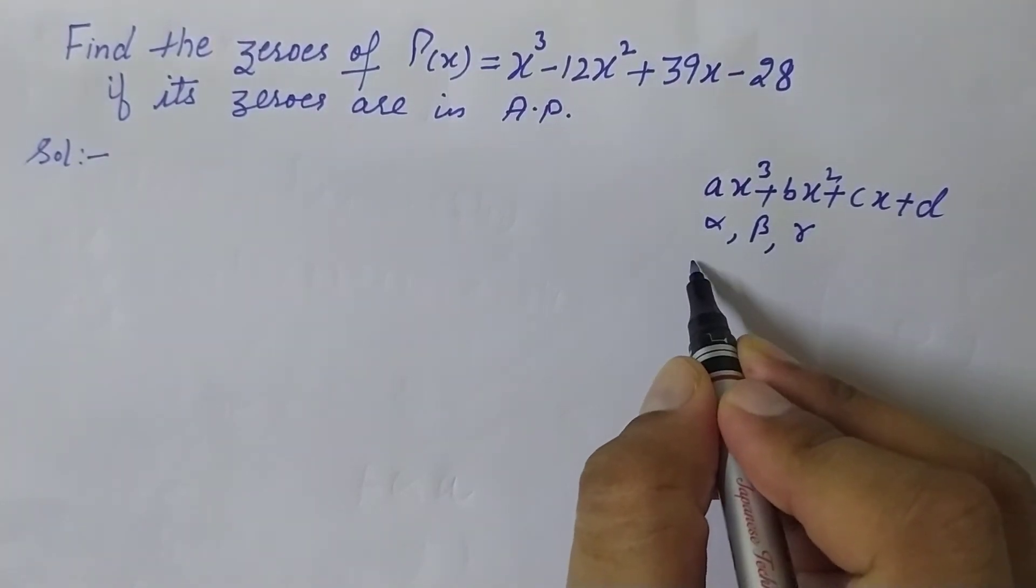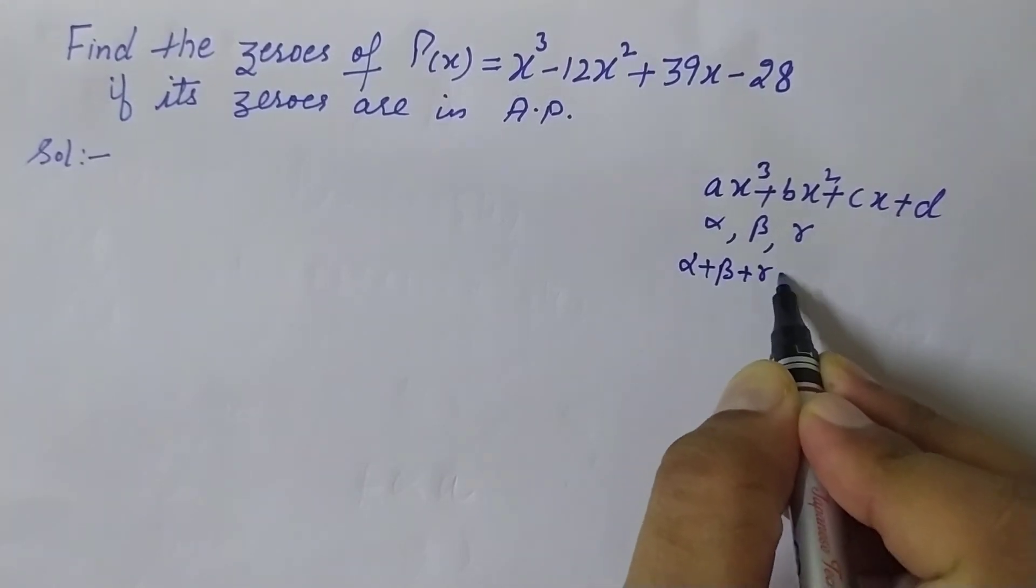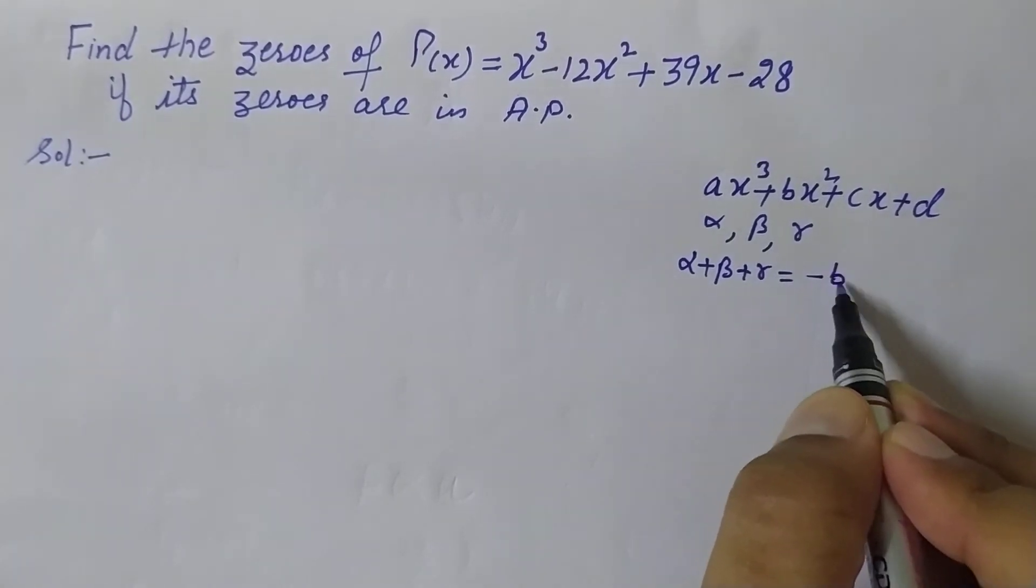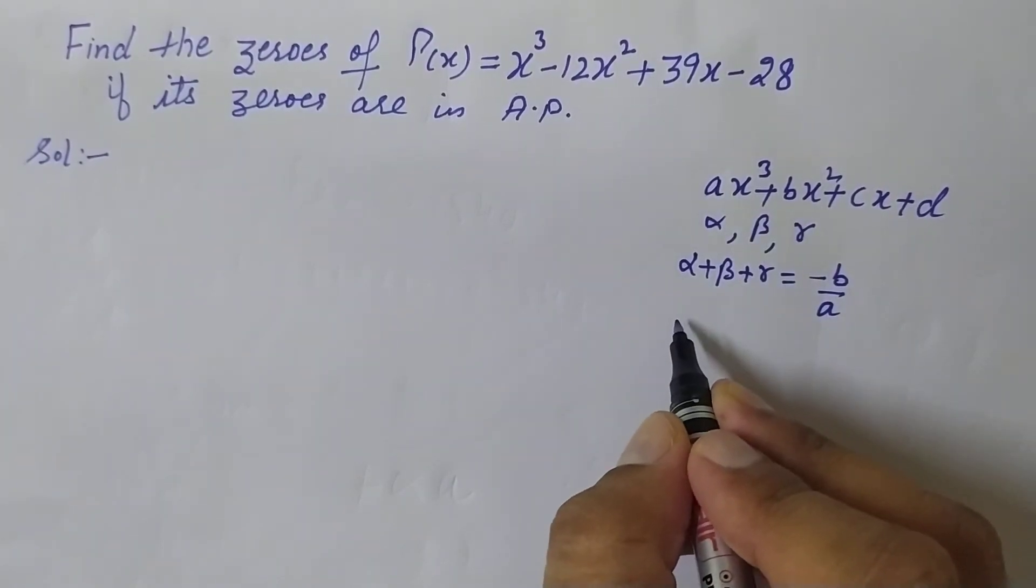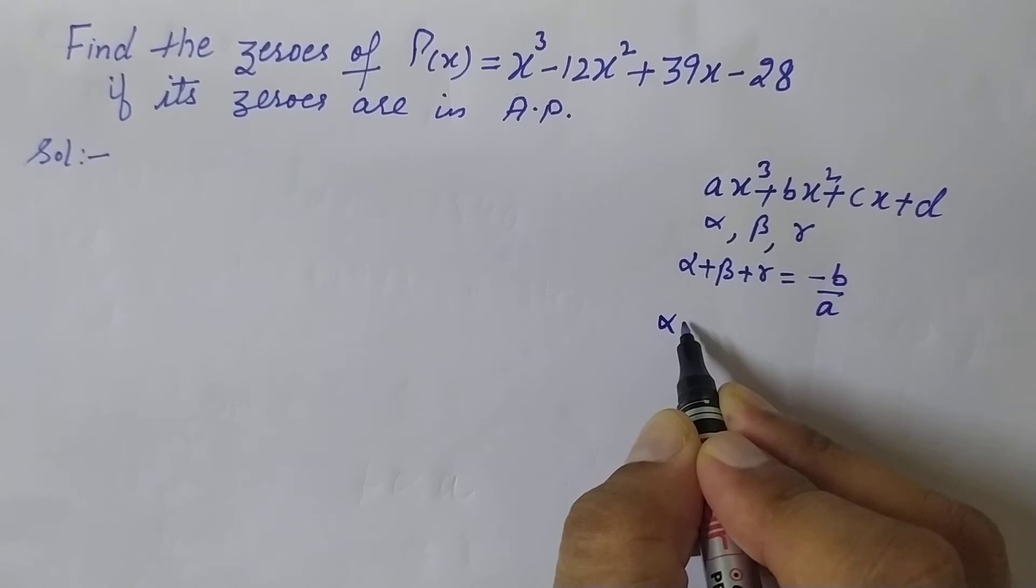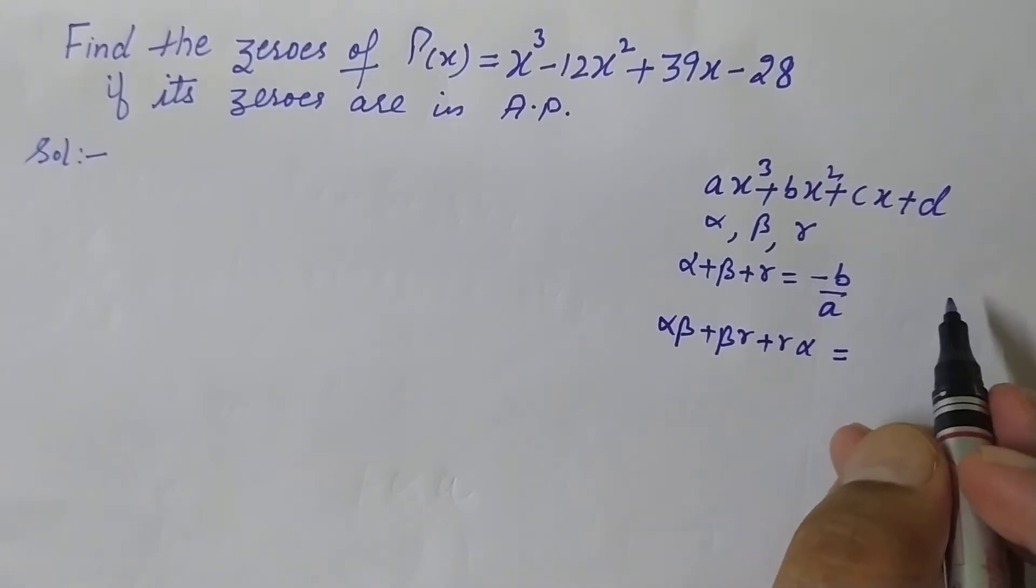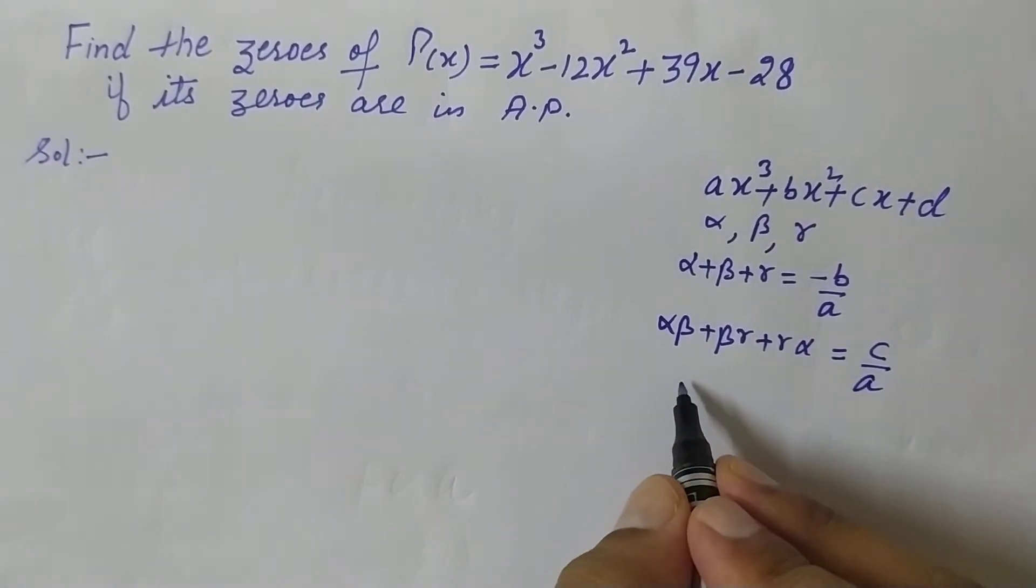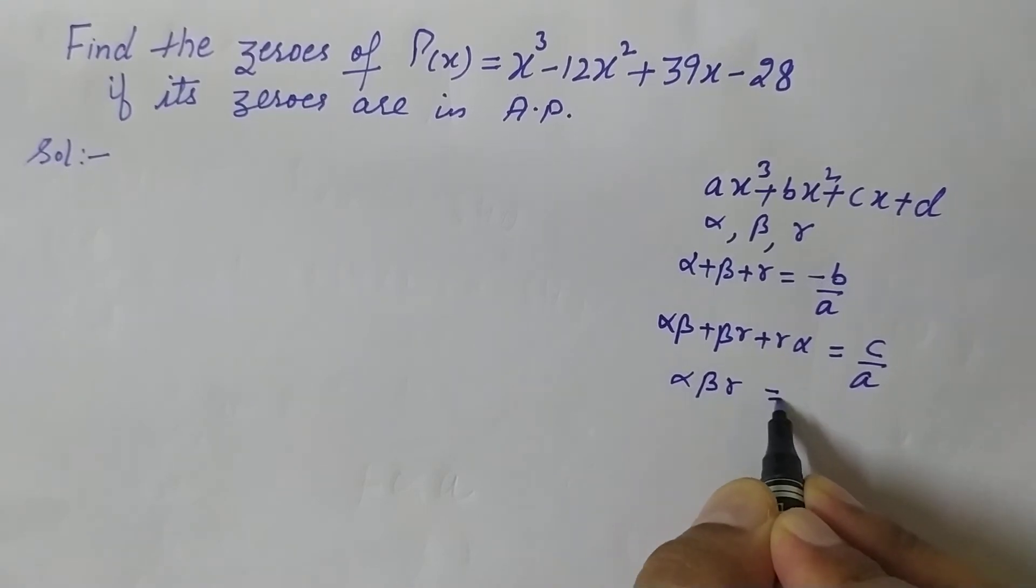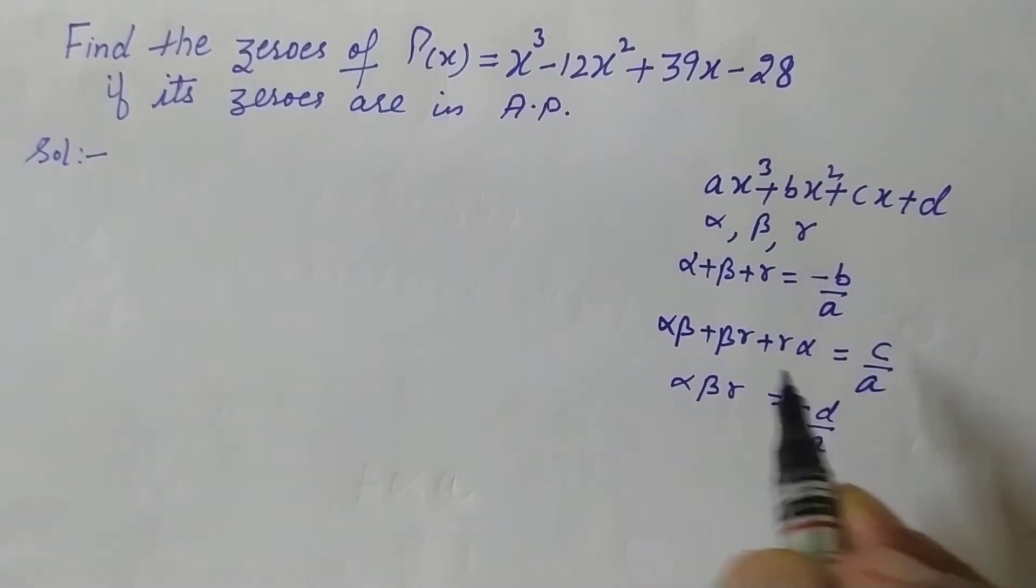If we want to find the sum of the zeros, that is α + β + γ, then that will be -b/a, meaning minus coefficient of x² over coefficient of x³. If I want to find the sum of the product of the zeros taken two at a time, meaning αβ + βγ + γα, then this will be equal to c/a. And the last one is the product of the zeros: αβγ = -d/a. These all formulas will be used in this question.